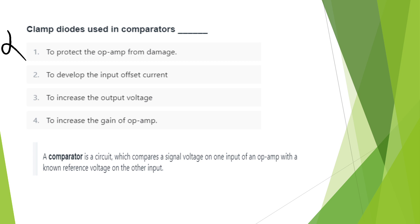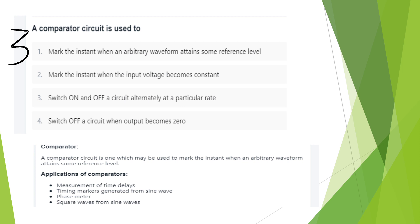Next, we will ask about the clamp diodes used in comparators. What are the functions of the comparators? A comparator is a circuit that compares the signal voltage on one input of an op-amp with a reference voltage on the other input. Clamp diodes are used to protect the op-amp from damage. Applications include measurement of time delay, timing markers, generator from sine wave, and phase meter.